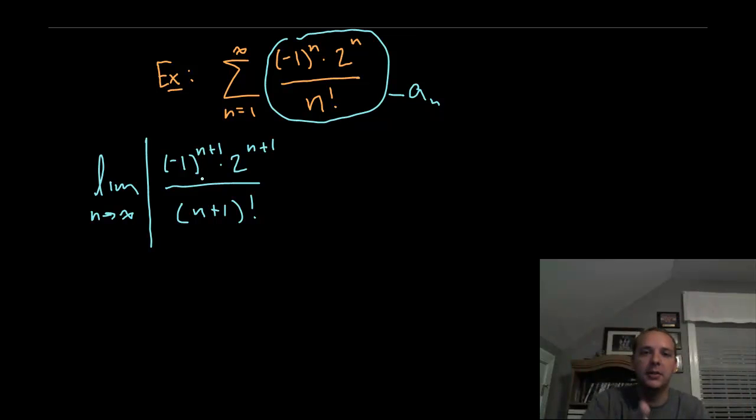So rather than saying, a big fraction divided by another fraction, we will use our algebra skills. And you guys probably know this is the same as multiplying by the reciprocal of that fraction. So instead of dividing by a over b, we'll multiply by b over a. So we'll take times n factorial over negative 1 to the n times 2 to the n. That just conserves space. It just keeps it from getting too large and too messy.